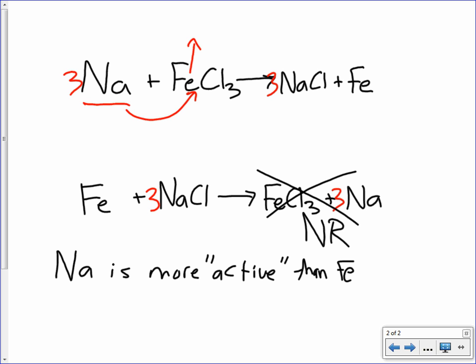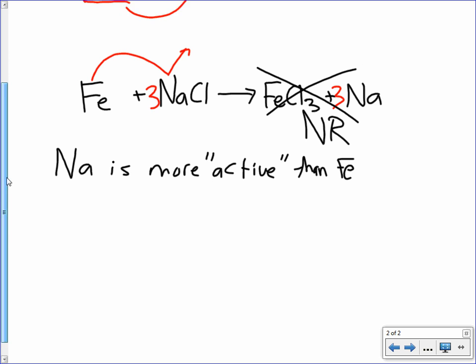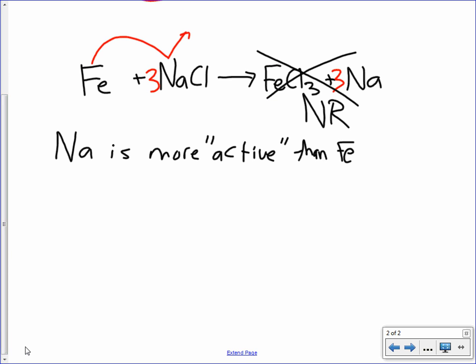And the second reaction, iron tries to come in, and sodium is like, no way. So, it doesn't happen. Iron is still chilling by itself. It will not work. That's because sodium is more active than iron. And when we say more active, what I mean is, more active means more easily oxidized.